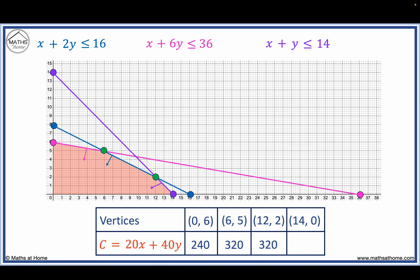When x equals 14, y equals 0, 20 times 14 plus 40 times 0 equals 280.